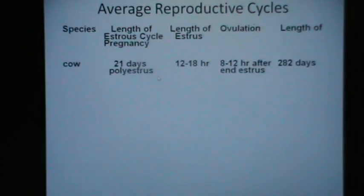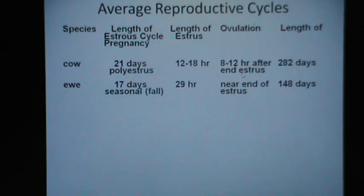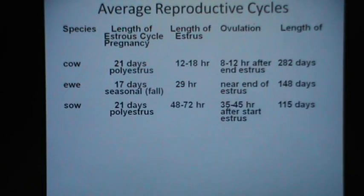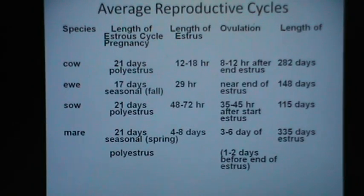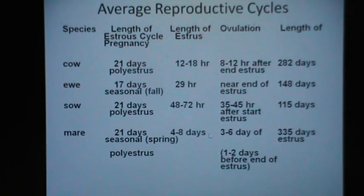Looking at average reproductive cycles across species: the estrus cycle length in cattle is 21 days and ovulation occurs 8 to 12 hours after the end of estrus, with gestation of 282 days. In the ewe, the estrus cycle is 17 days, estrus length is 29 or so hours, and ovulation occurs near the end of estrus. In sows, the length of estrus is 48 to 72 hours and ovulation occurs 35 to 45 hours after start of estrus. In mares, ovulation occurs 3 to 6 days into estrus or 1 to 2 days before the end of estrus.